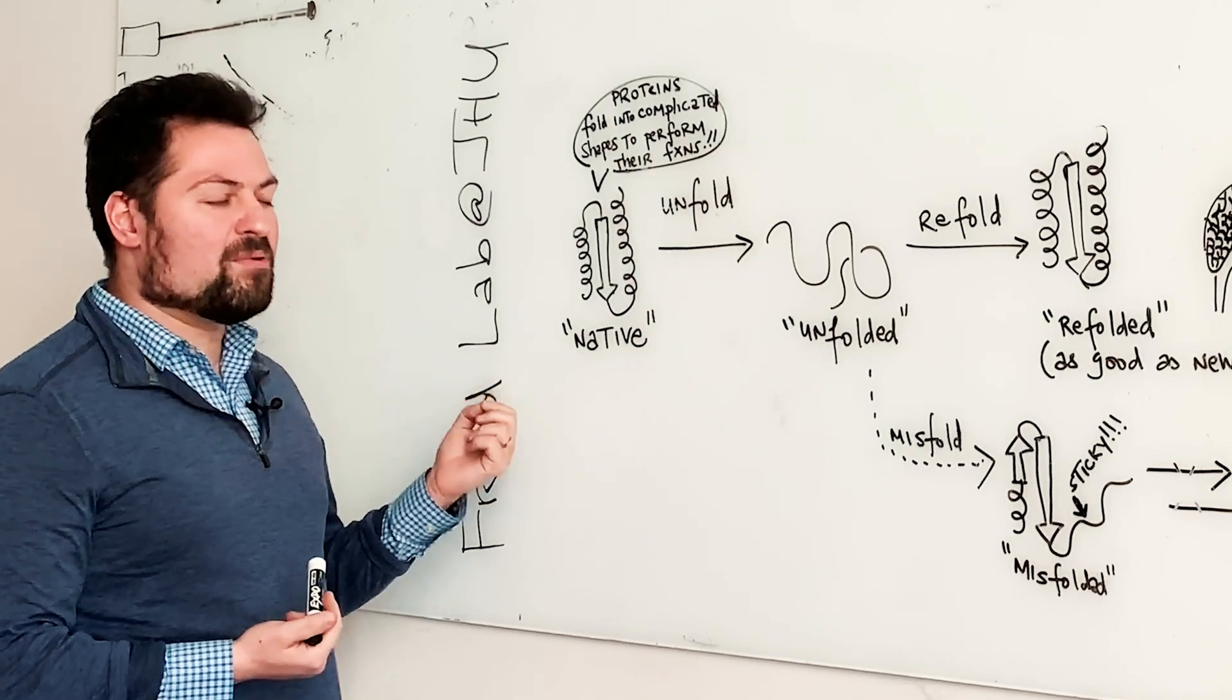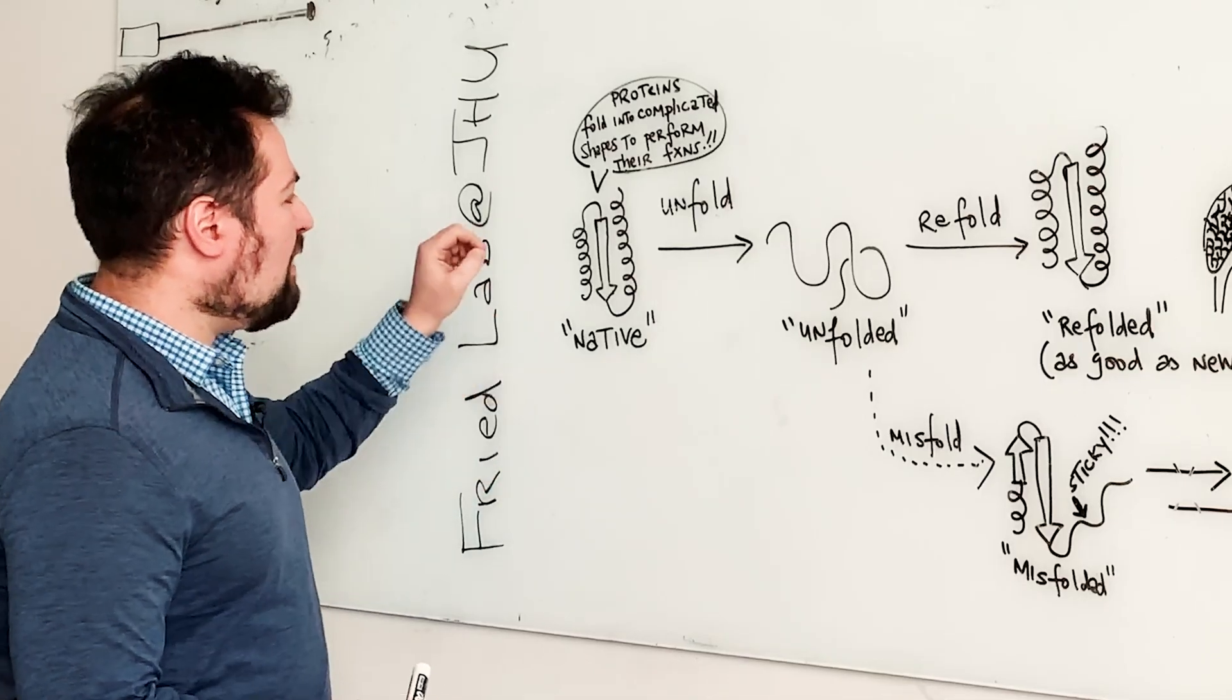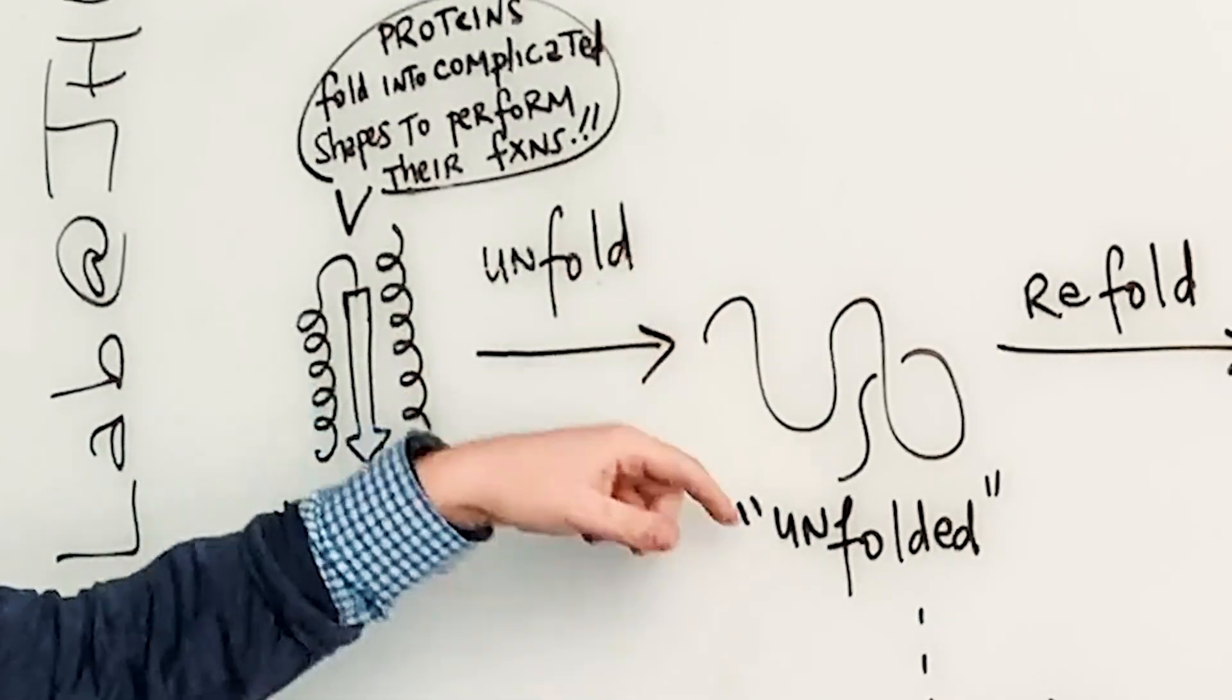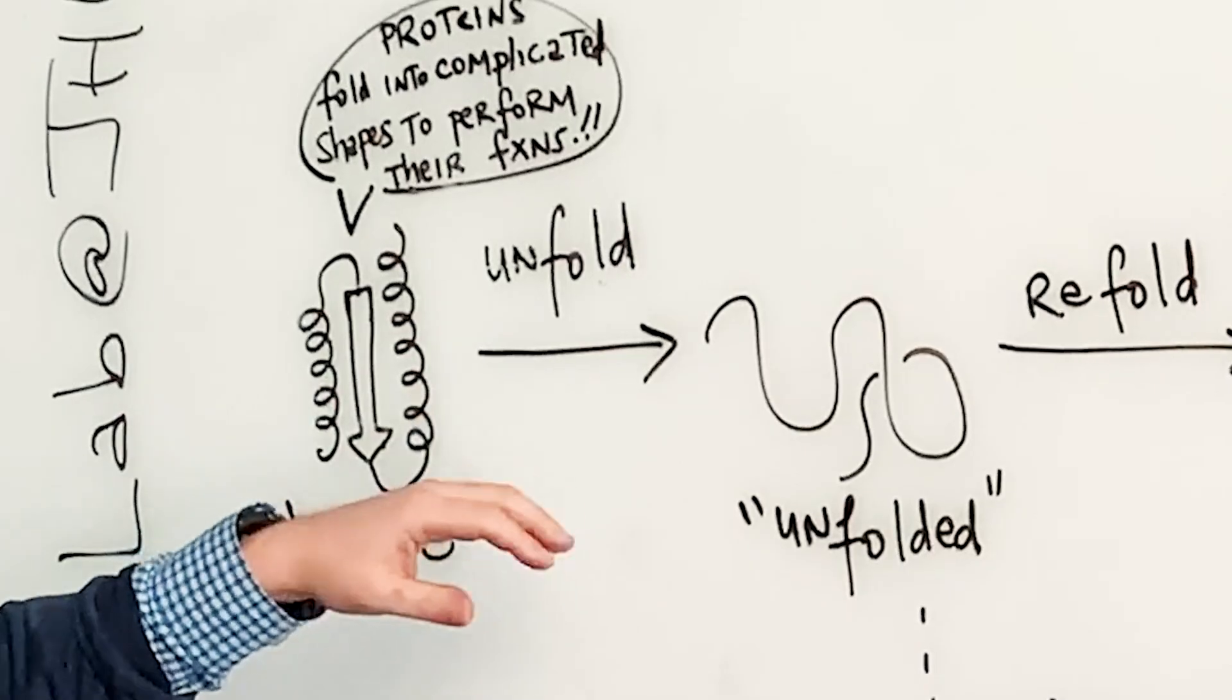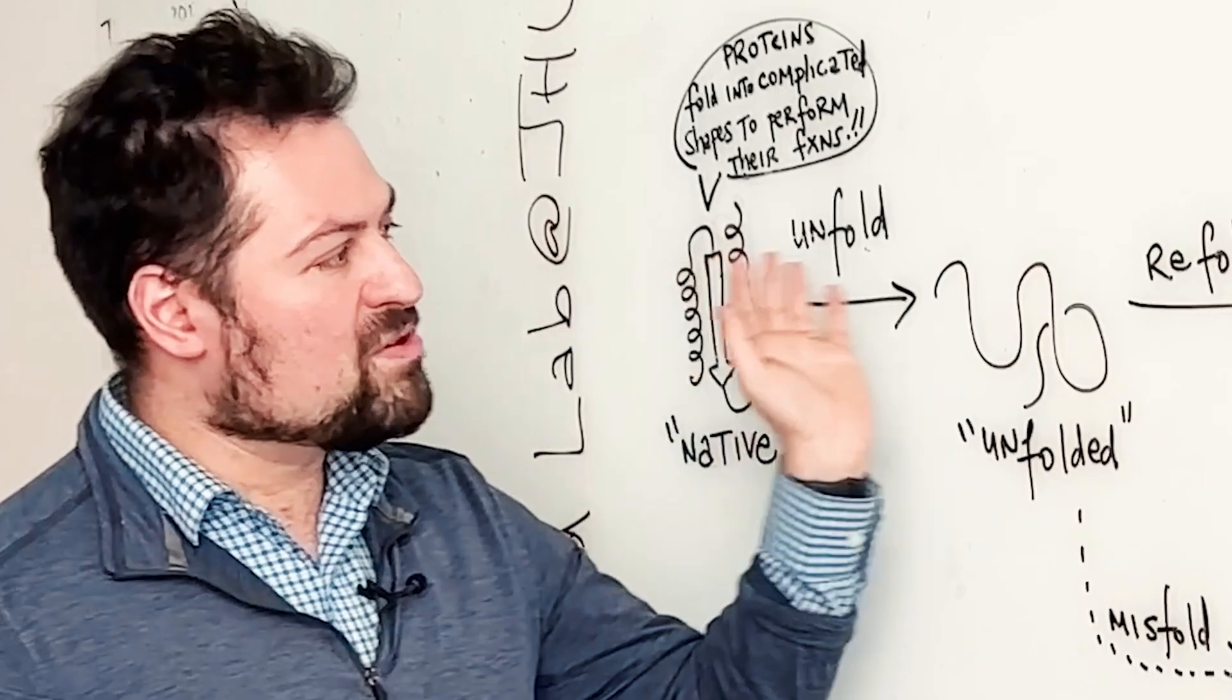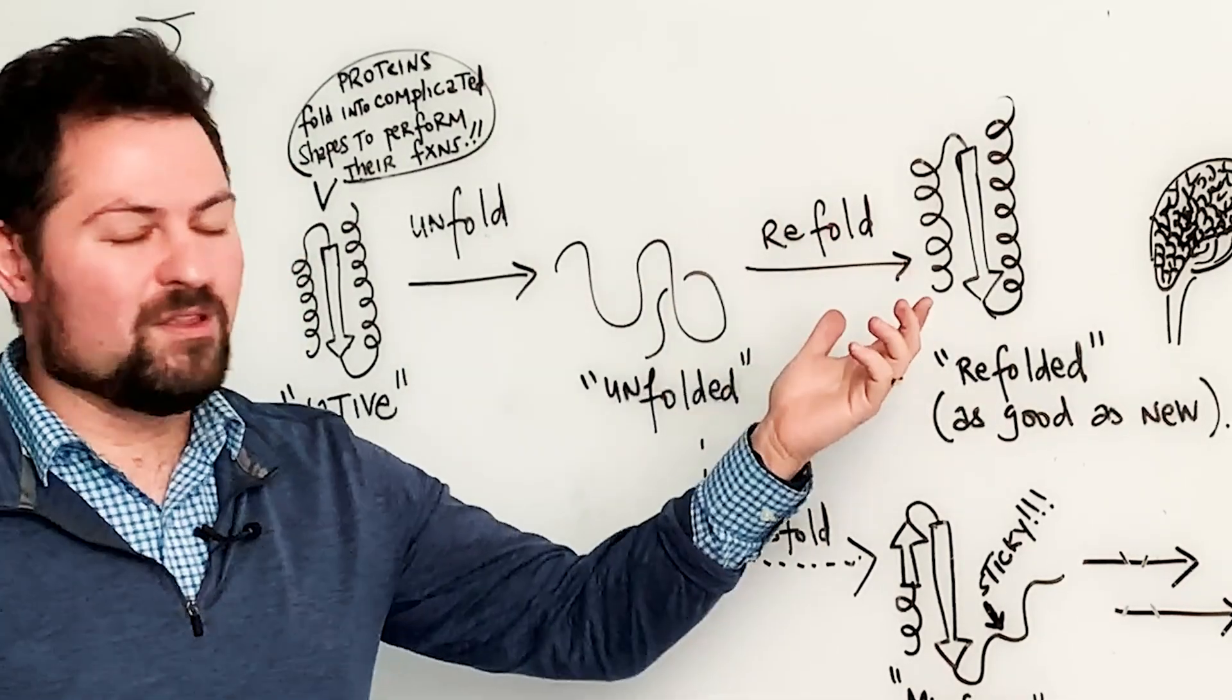So in order to interrogate that process, the experiment that has typically been done is to take a protein, unfold it so that you wind up with this more spaghetti-like disordered molecule that we call the unfolded protein, and then remove the force that unfolded it, thereby compelling it to return to its original conformation, which we would call refolding the protein.